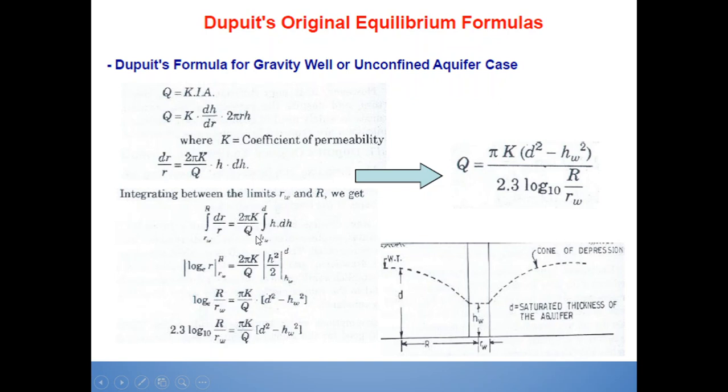Integration of dr/r, rw to R, will be equal to 2πK/Q, as K is taken as constant. Integration of this h dh, limits are from hw to d. This will yield the result as 2.3 log10(R/rw), which is further equal to πK(d²-hw²). After simplifying this, you will get the discharge as Q is equal to πK(d²-hw²)/(2.3 log10(R/rw)). In this case, if you want to find out the discharge Q, you should know all other parameters like the value of k, the value of d, value of hw.